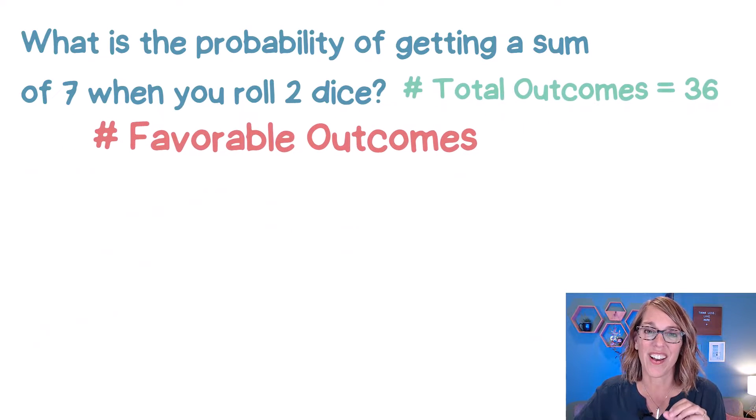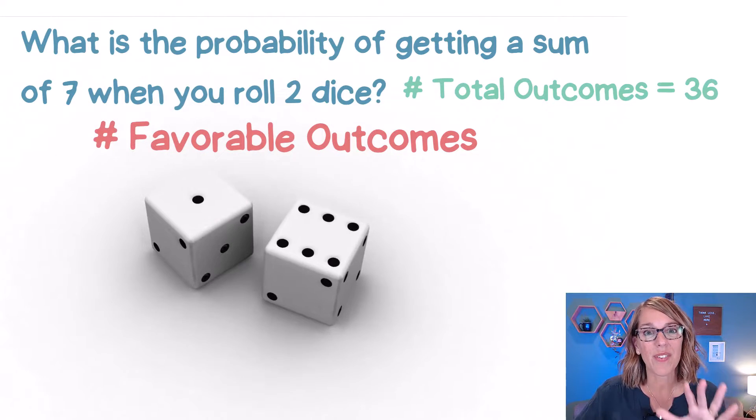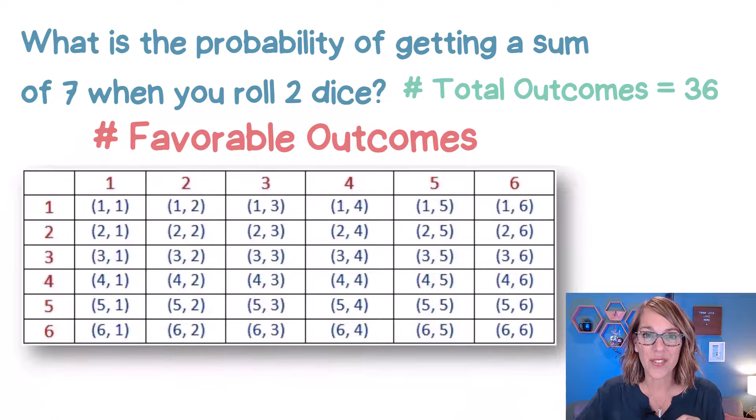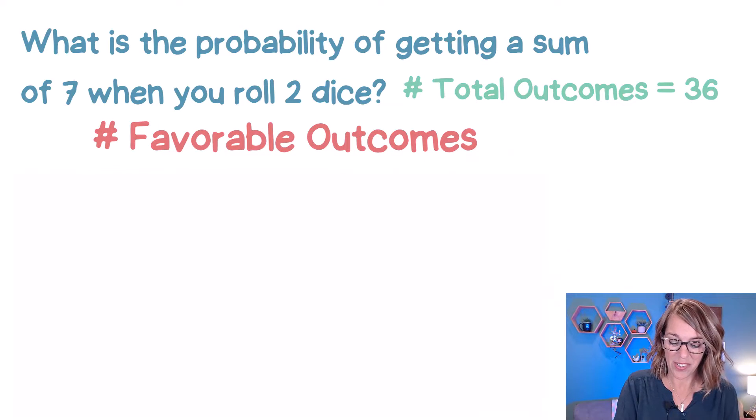Now let's focus on that numerator. So how many of those 36 pairs add up to seven? Now I can use that grid again, so if you're lucky enough to have that grid, you can count up those pairs that add up to seven, but if you happen to not have a grid, that's okay too.